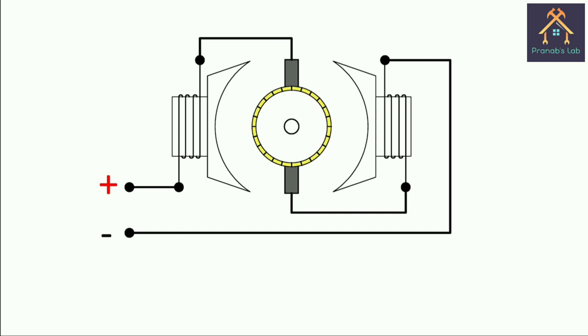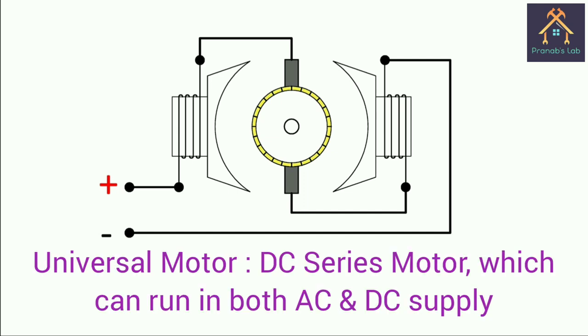This is the circuit diagram of the drilling machine. Basically, this is a DC series motor which can operate in both AC and DC supply.